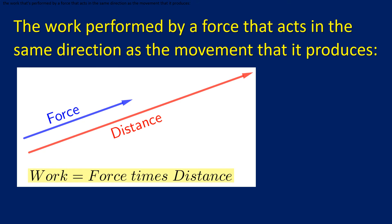The first is the work performed by a force that acts in the same direction as the movement that it produces. We teach students when they're young that we find the work by multiplying the force by the distance or the displacement. Later, when students learn to express forces and displacements as vectors, we can teach them how to calculate the work done by a force that does not act in the same direction as the movement that it produces.